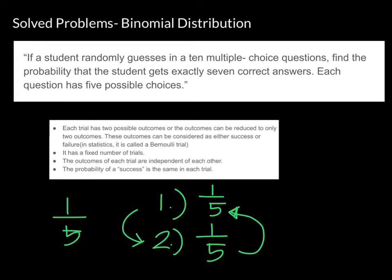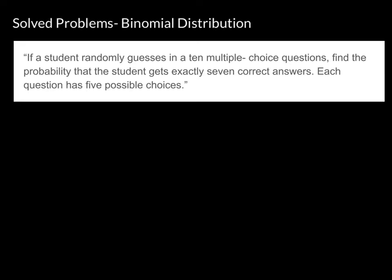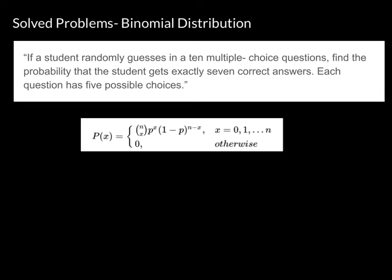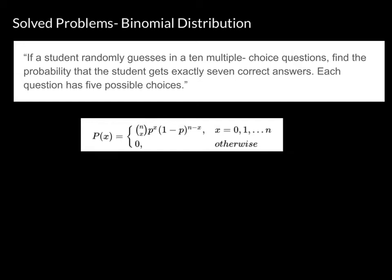Now that we know this problem falls under a binomial distribution, we can proceed to solving it. To find the probability of a random variable X in a binomial distribution, we use the formula: P(X) = C(n, x) * p^x * (1-p)^(n-x), where p is the probability of success, (1-p) is the probability of failure, x is the number of successes, and n minus x is the number of failures.